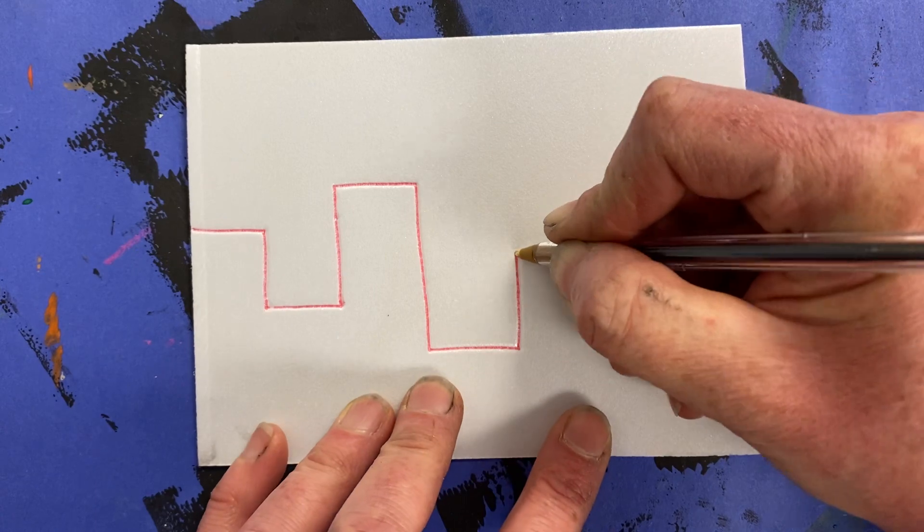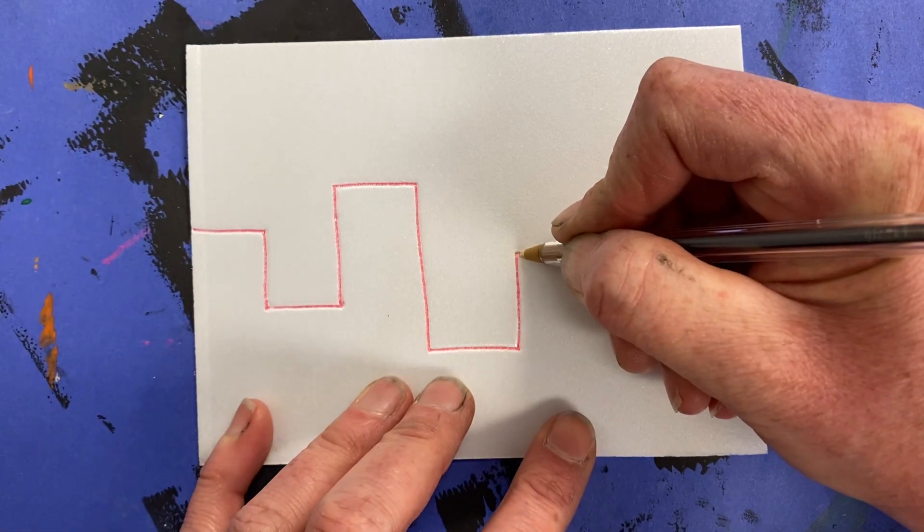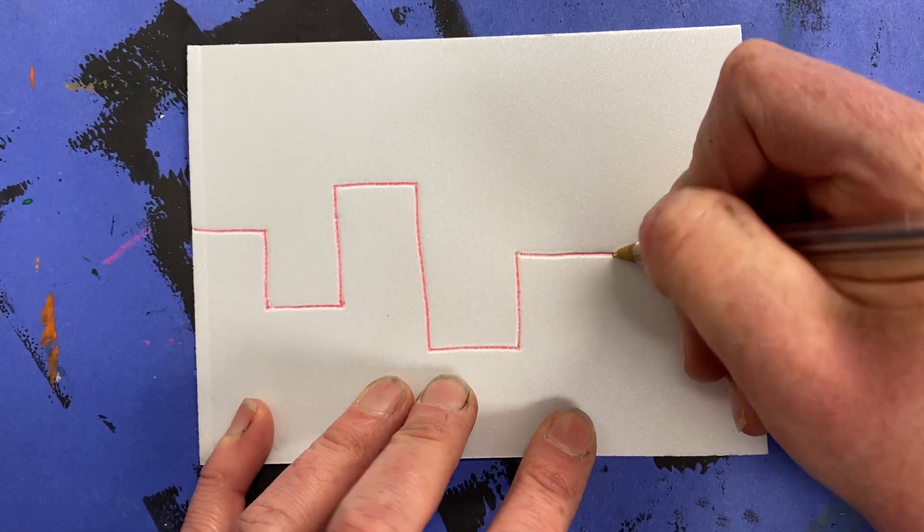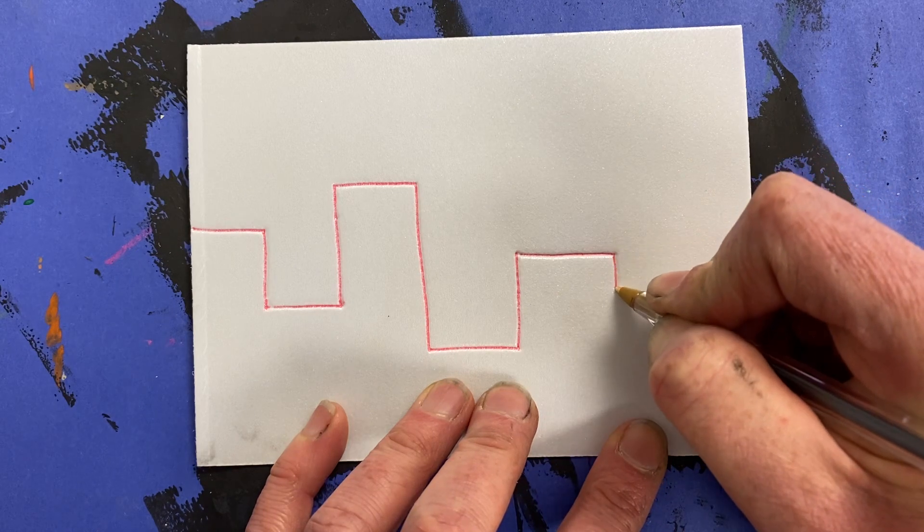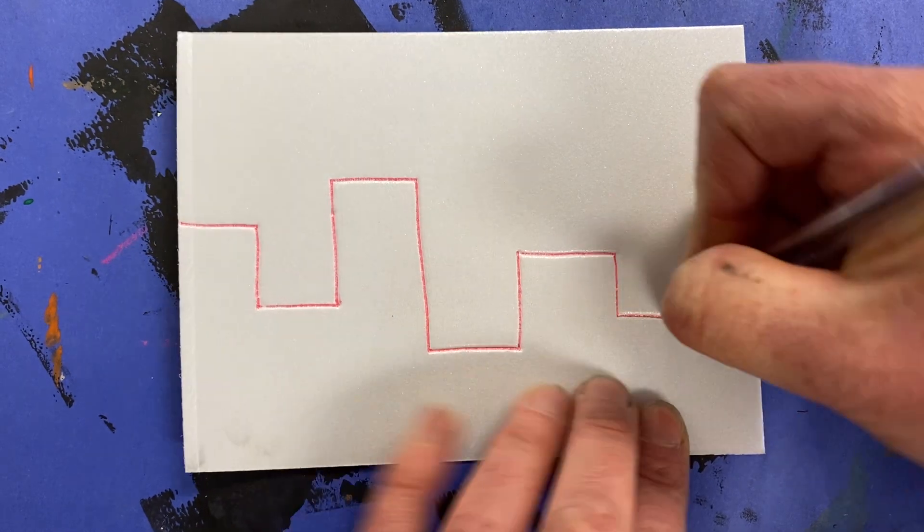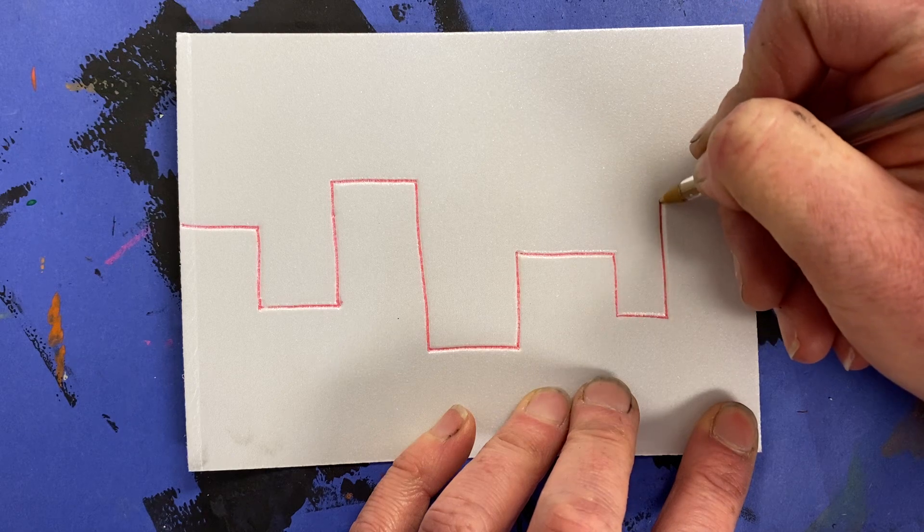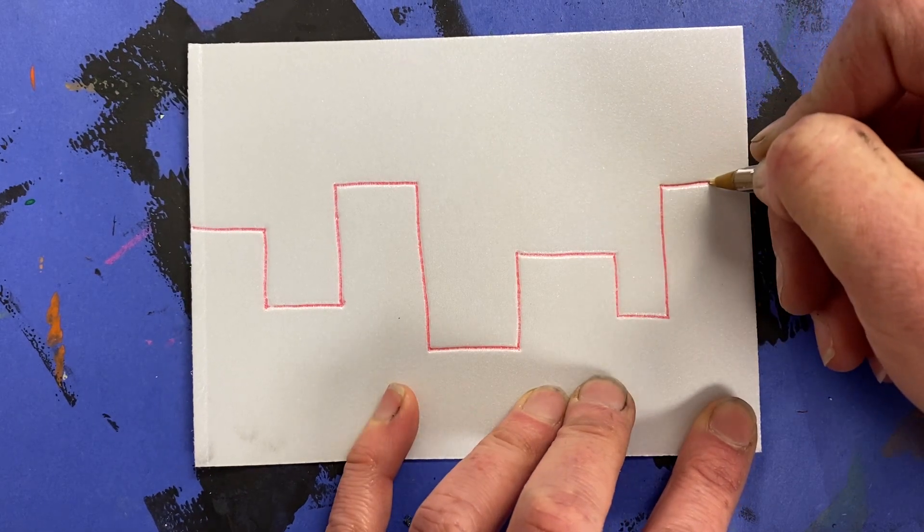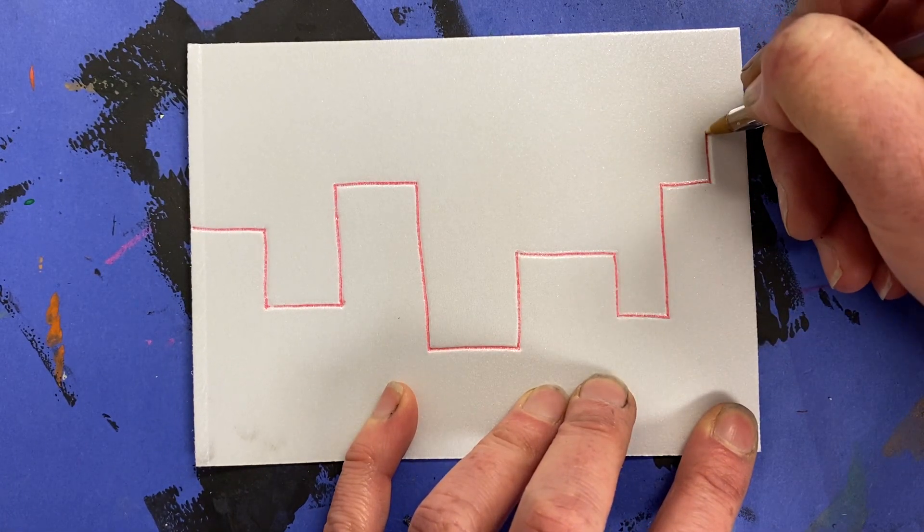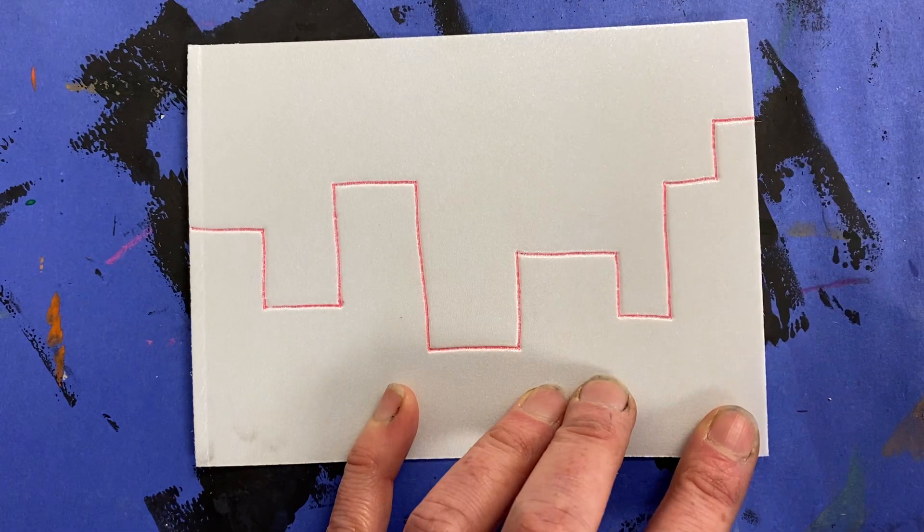Going nice and slow because we only get one piece of styrofoam. Horizontal. I'm keeping them nice and big. And vertical. Horizontal. And vertical. Maybe I'll go even higher. There's another vertical. And I'm going to go off the page.